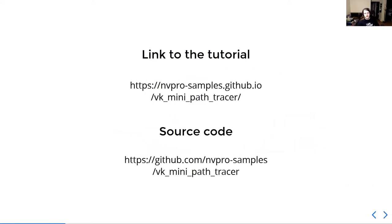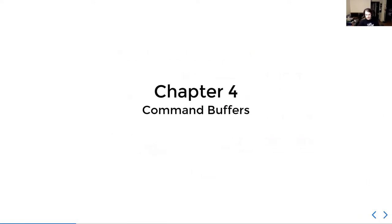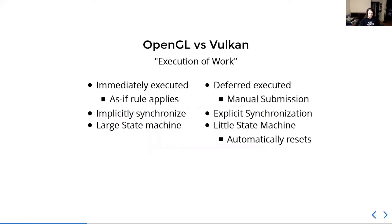Links to the tutorial and source code are available online at these locations. So Chapter 4: Command Buffers. Before I explain what a command buffer is, it is important to draw some background info about the Vulkan mental model, specifically on the execution of work — like, if you have a draw call, what does Vulkan do versus OpenGL?